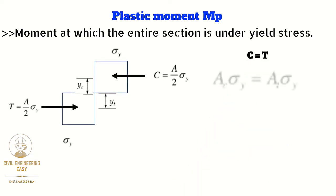As we know that the compressive force is equal to the area of compression zone multiplied by the yield stress, that will be equal to the tensile force which is equal to area in the tensile zone multiplied by the yield strength. As we know that the area of compression zone is equal to area of tensile zone, that will be equal to A divided by 2.